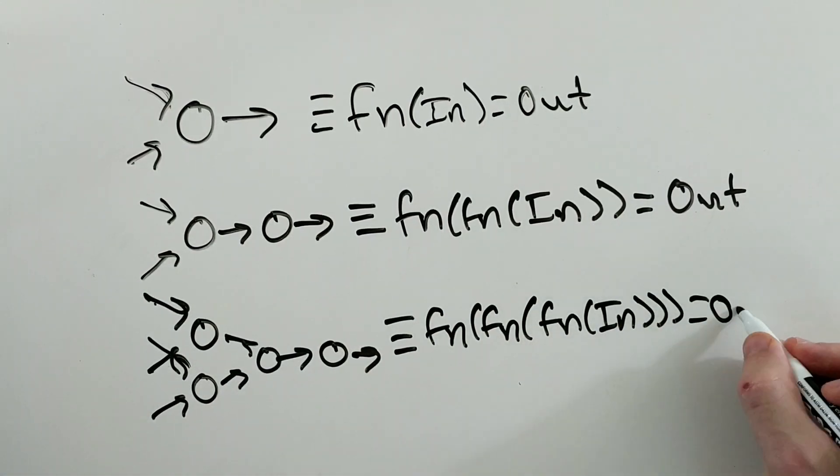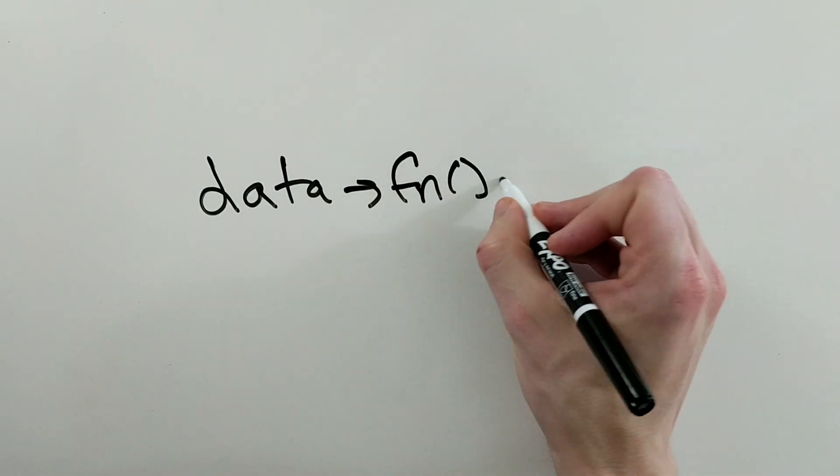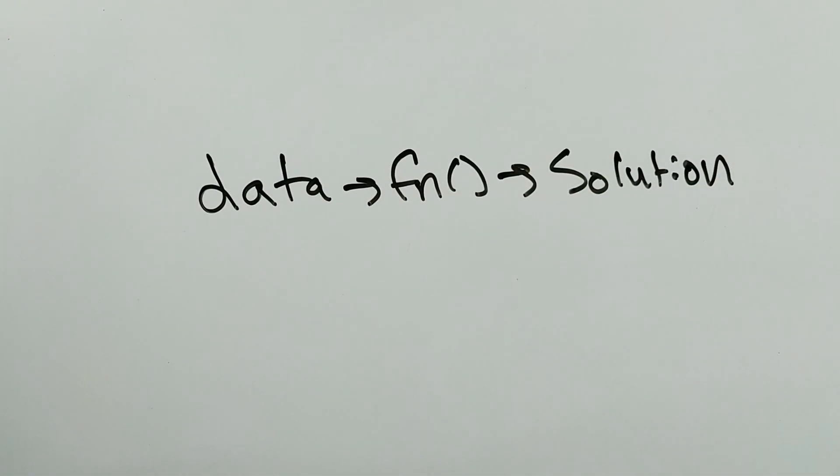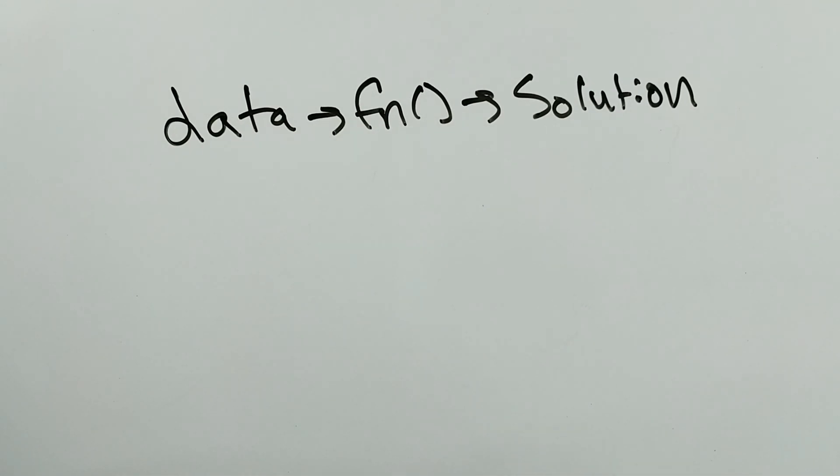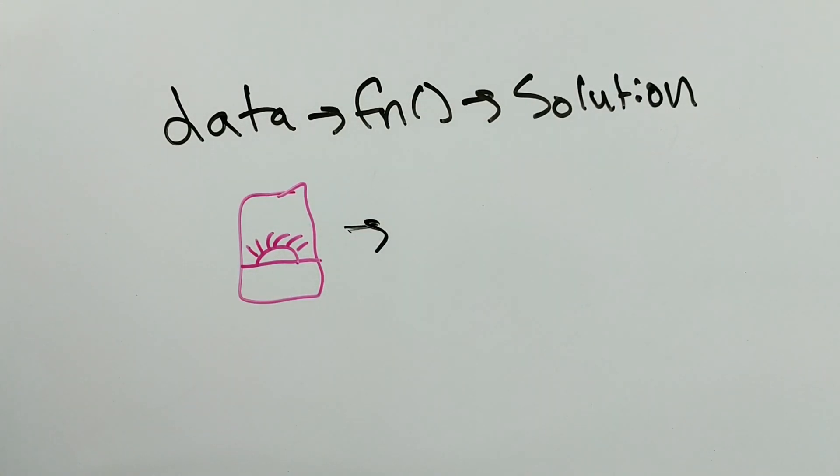So how does creating this function help solve our problem? First off, we assume that there is some underlying function that maps the data we have to the solution. This is pretty reasonable. For example, given any picture, there should be some function that says whether or not there's a face in the picture.